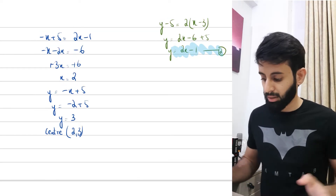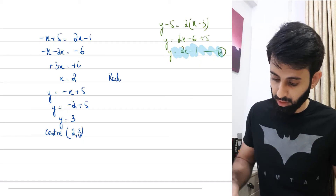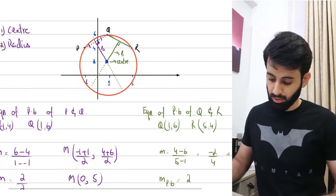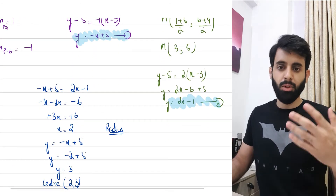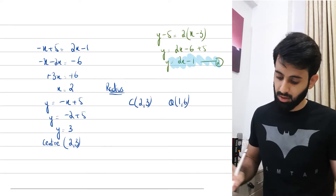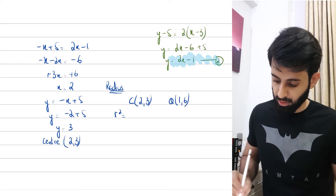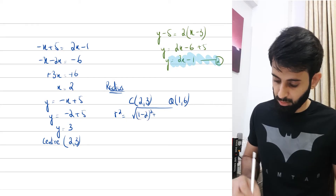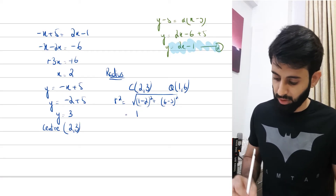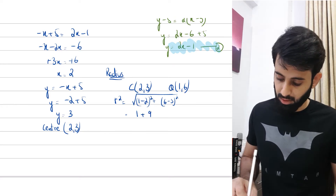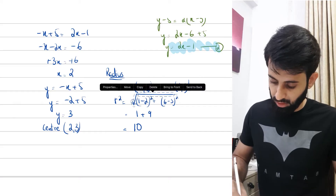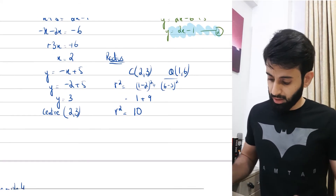Now I need the radius. I have the center (2, 3) and three points on the circumference — I can pick any one. Using Q(1, 6): r² = (1-2)² + (6-3)² = (-1)² + 3² = 1 + 9 = 10. So r² = 10.